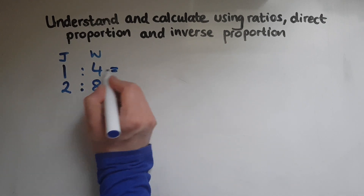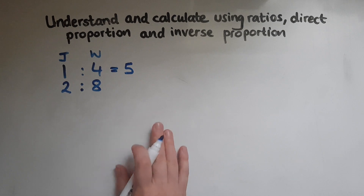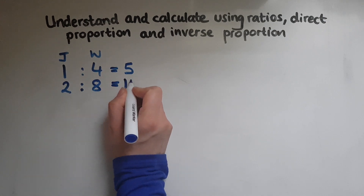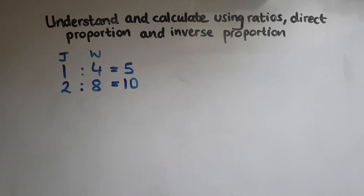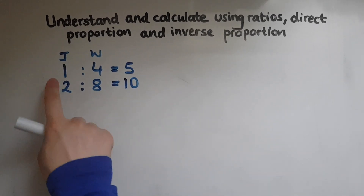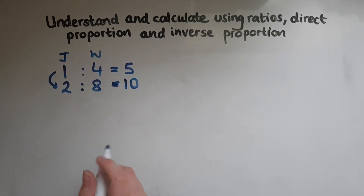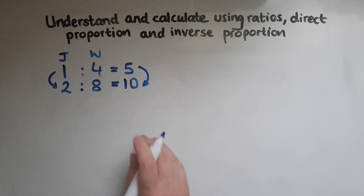One part juice and four parts water makes five parts, or five units of drink. When we doubled the ingredients, the total amount doubled as well. So when you double the ingredients, the total doubles too. By using the ratio one to four we worked out how much water we need if we used two parts juice, and also we looked at the total.